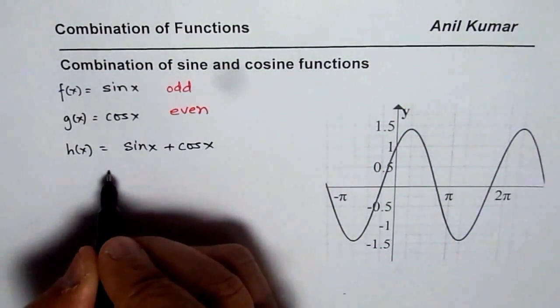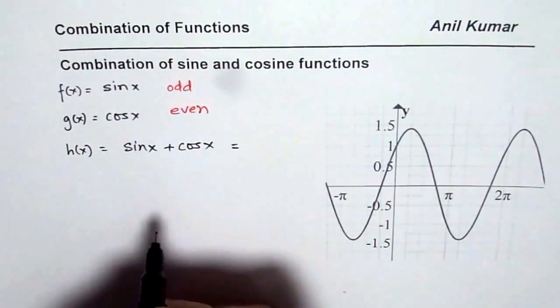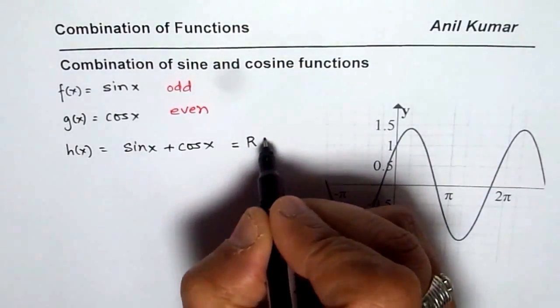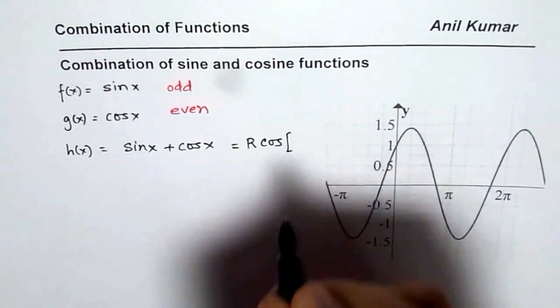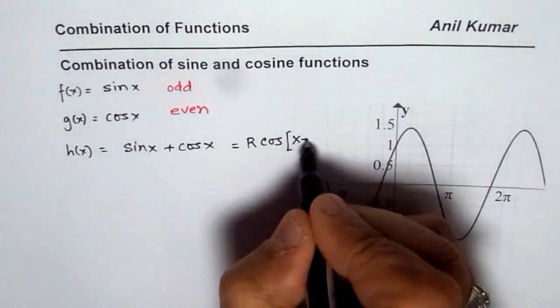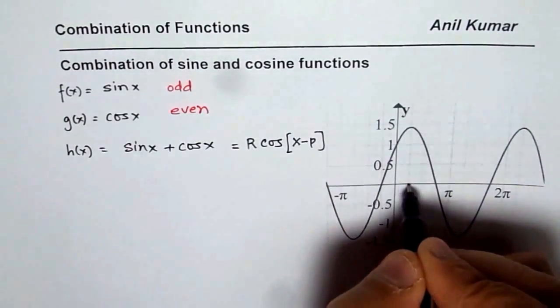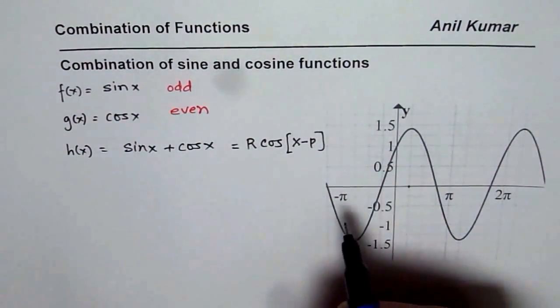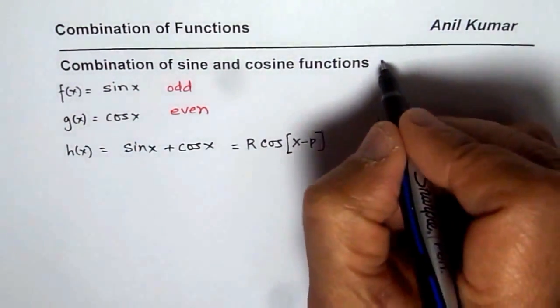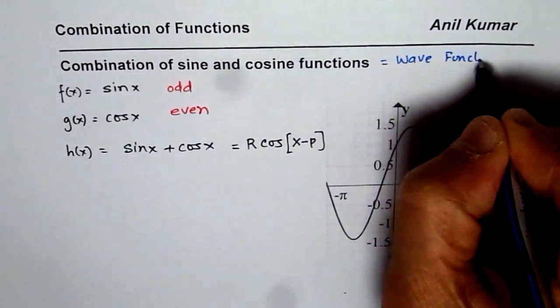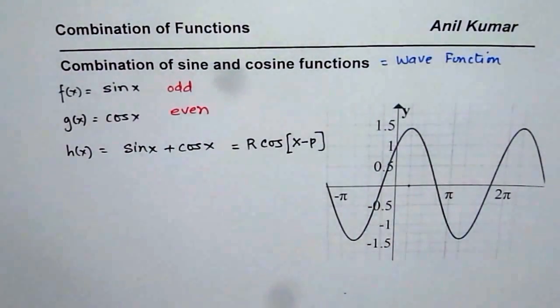So it suggests that the combination of this function could be written as a cosine function. So let me write this as R cos(x-p). We don't know what this function is, but we will try to find the equation of this function, where p is the phase shift. It could be written like this. And now in this video, we will explore what it should be. Well, to give you a heads up, it is called wave function. So this is equal to a wave function, and I do have many videos on that, but I think this is a good opportunity to explain it once again.